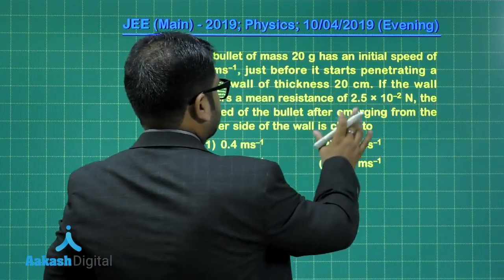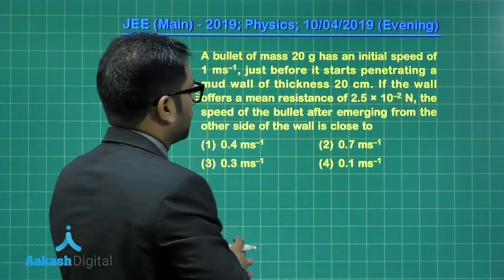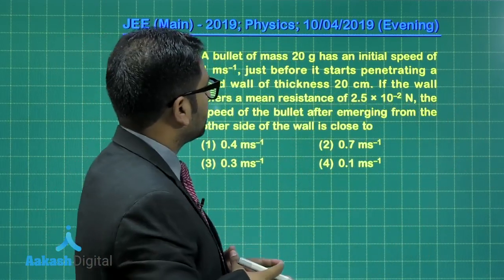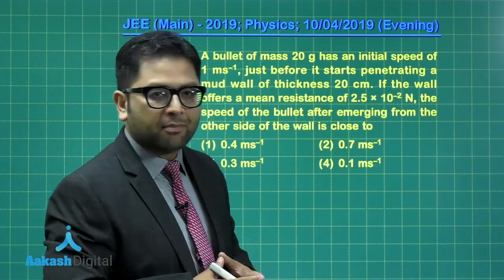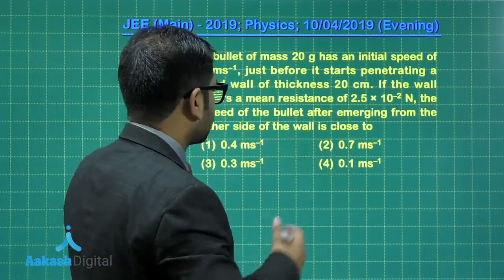The question further says if the wall offers a resistance of this much, that's a force, we need to calculate the speed of the bullet after emerging from the other side of the wall.